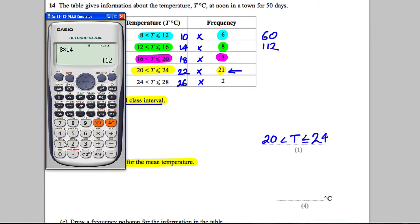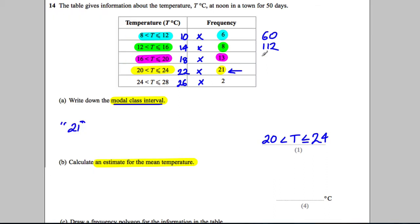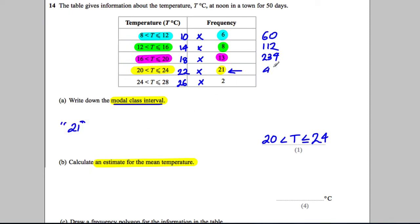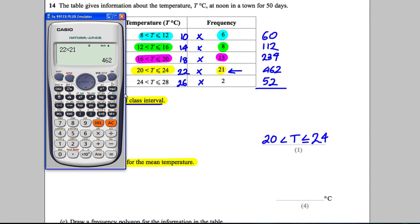We've got 18 multiplied by 13, which is going to be 234. We've got 22 multiplied by 21, which is going to be equal to 462. And we've got 2 times 26, which is going to be equal to 52. So we add those up.